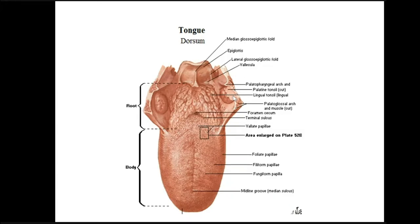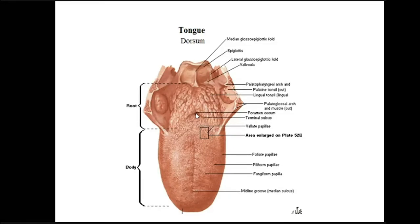Looking at the superior surface of the tongue, the tongue is covered with mucous membrane — stratified squamous orthokeratinized epithelium. The tongue is divided into two portions by a V-shaped sulcus. At the apex of this V there is a deep depression called the foramen cecum, which is the site of origin of the thyroid gland during development. It is called cecum because the duct first is open then becomes closed, leaving a depression. This V-shaped sulcus is called the terminal sulcus.